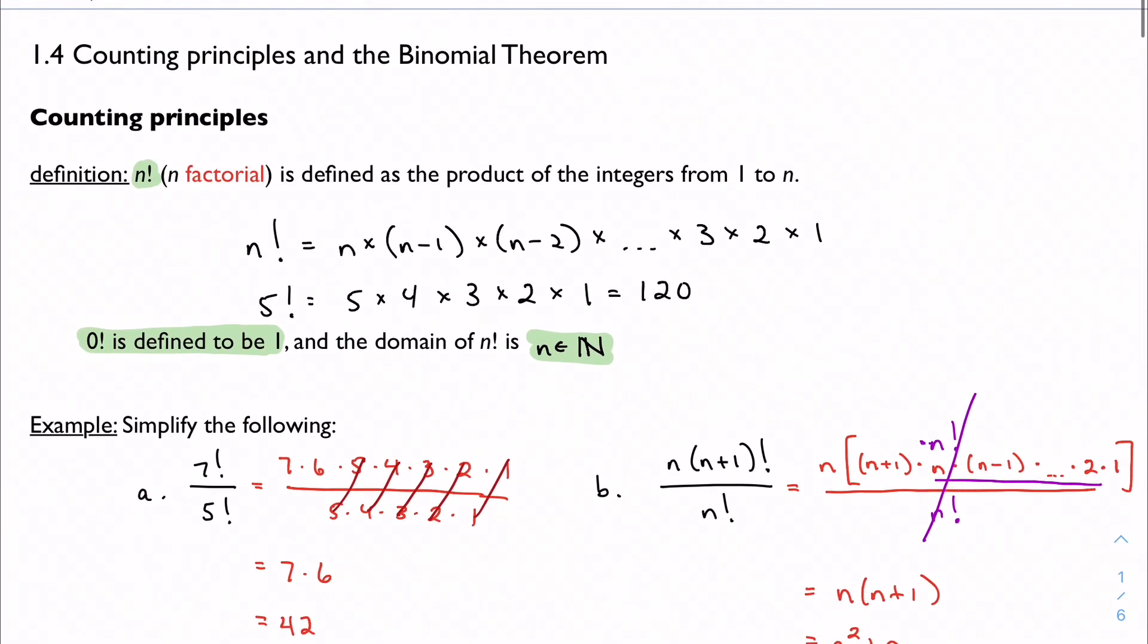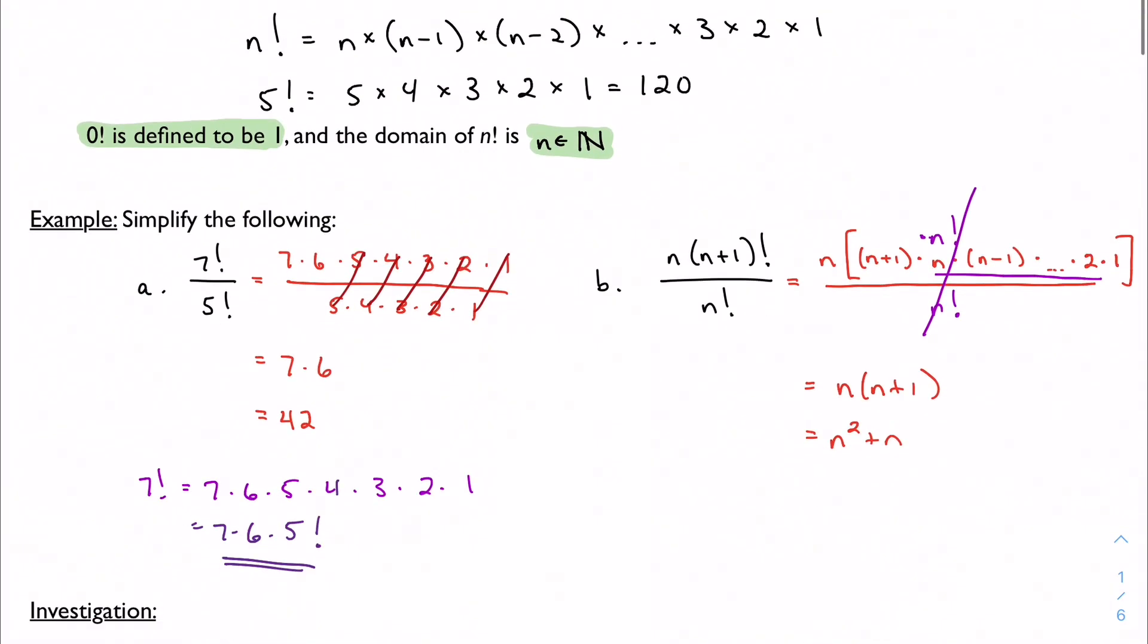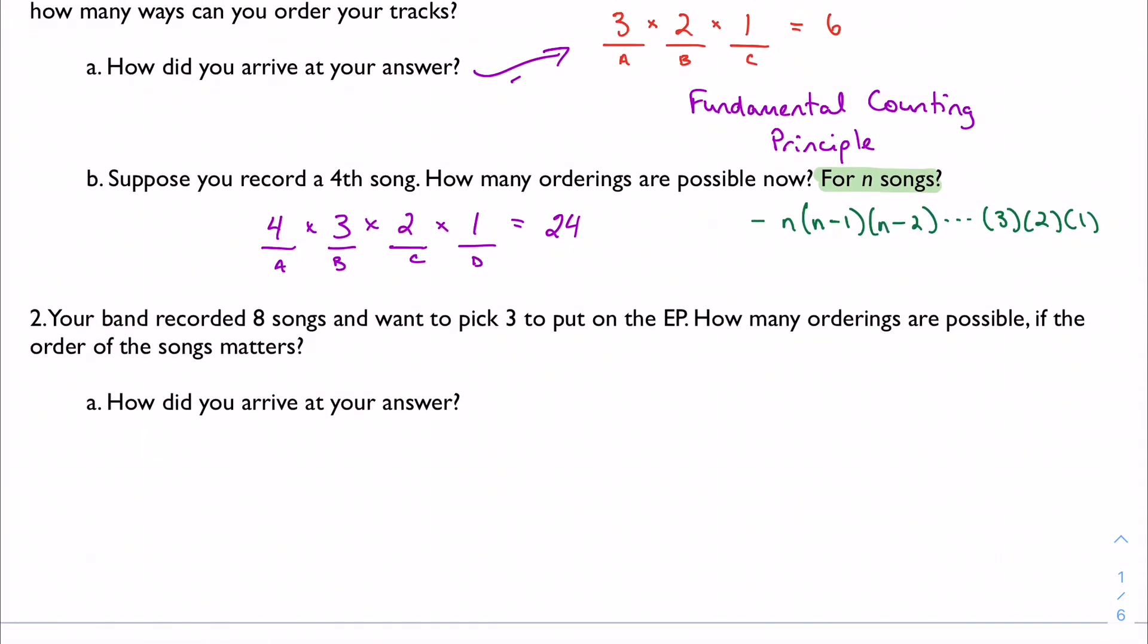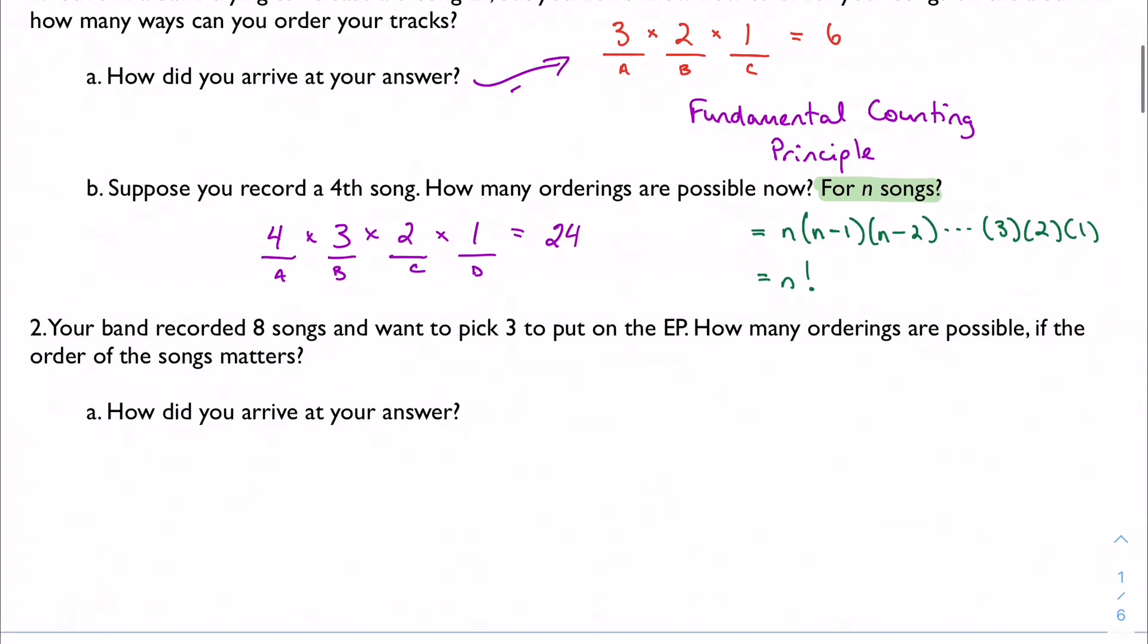And this should look familiar, because I just talked about it up here. That's our definition of n factorial. And sure enough, we're going to come back to that in a minute when we summarize our findings, but the way we would order n songs into n spots, or n objects into n positions, is n factorial.